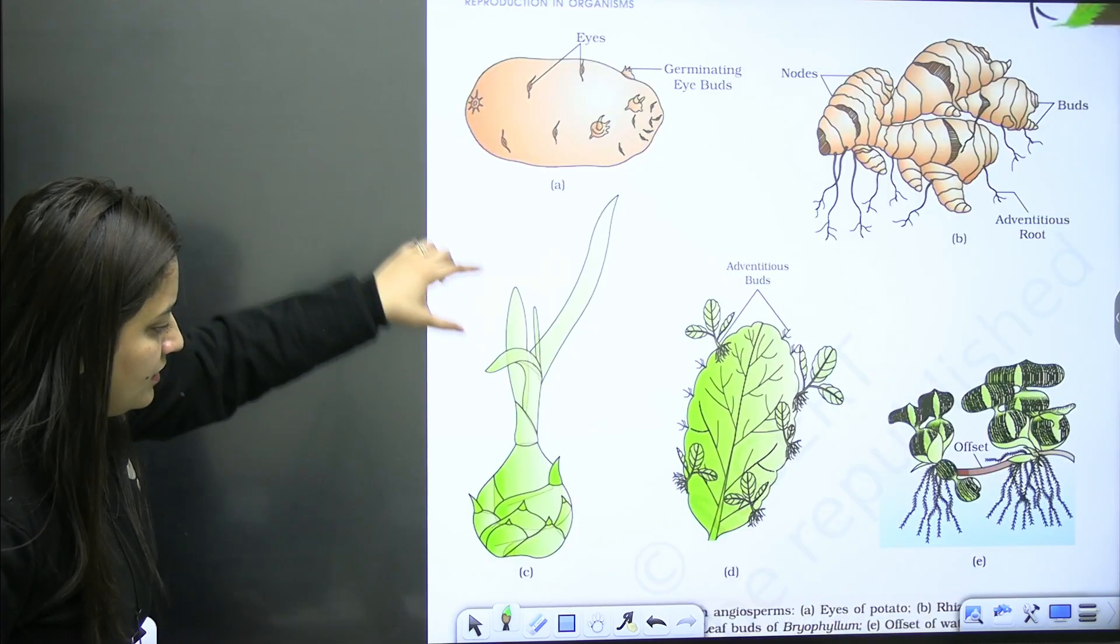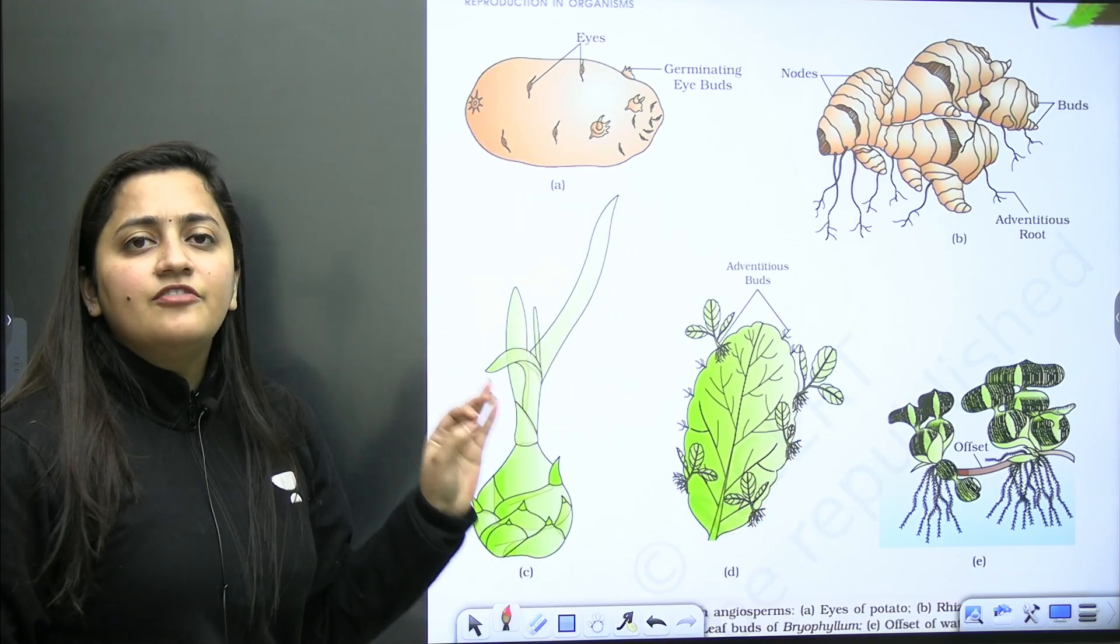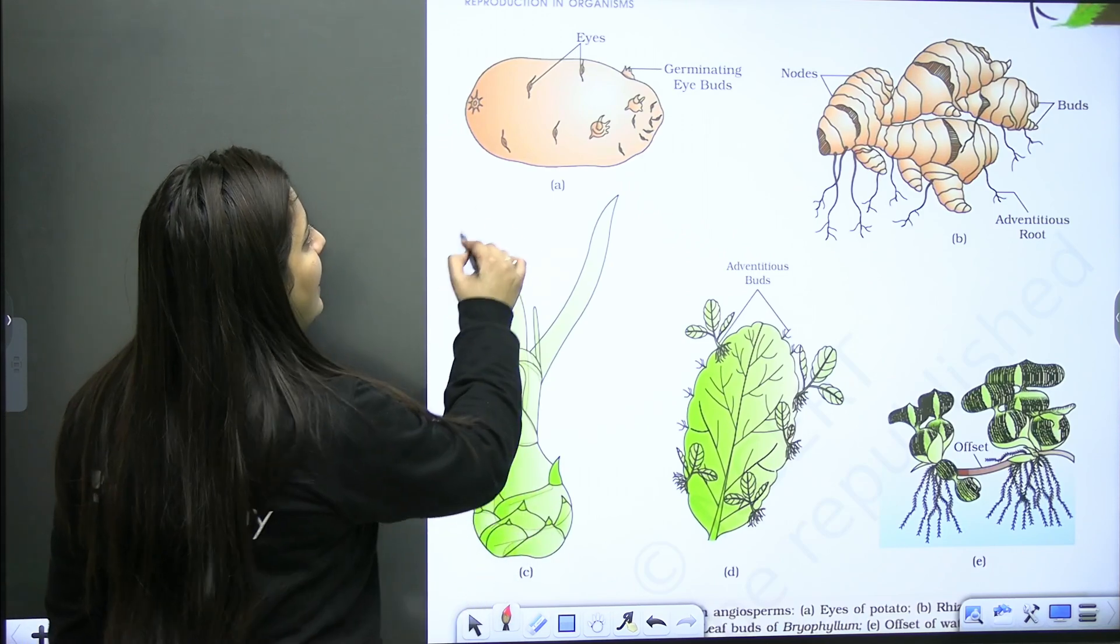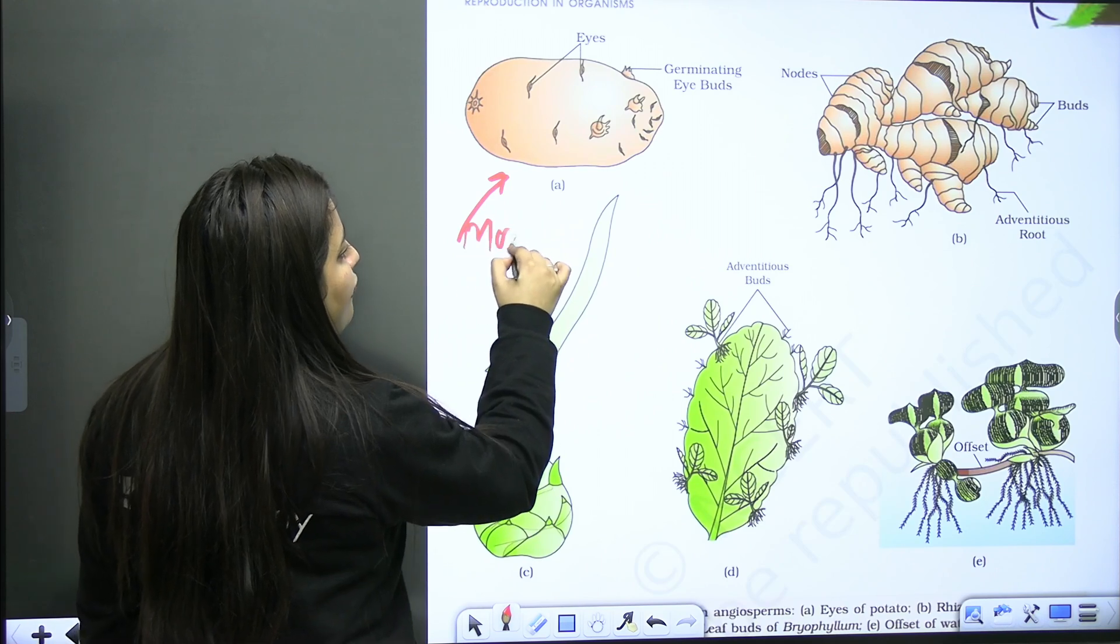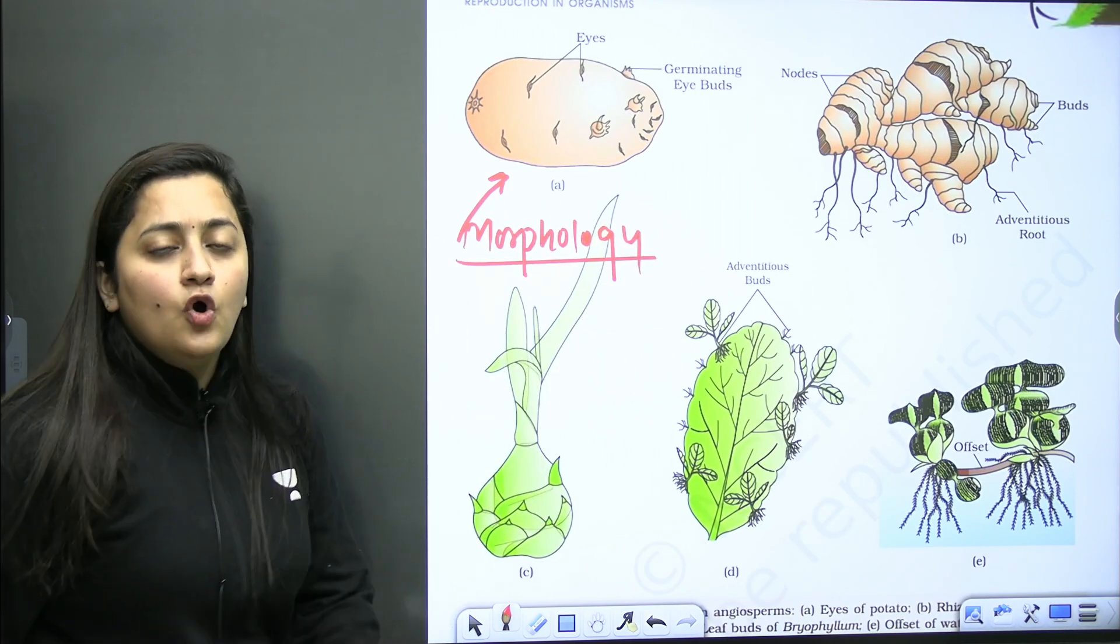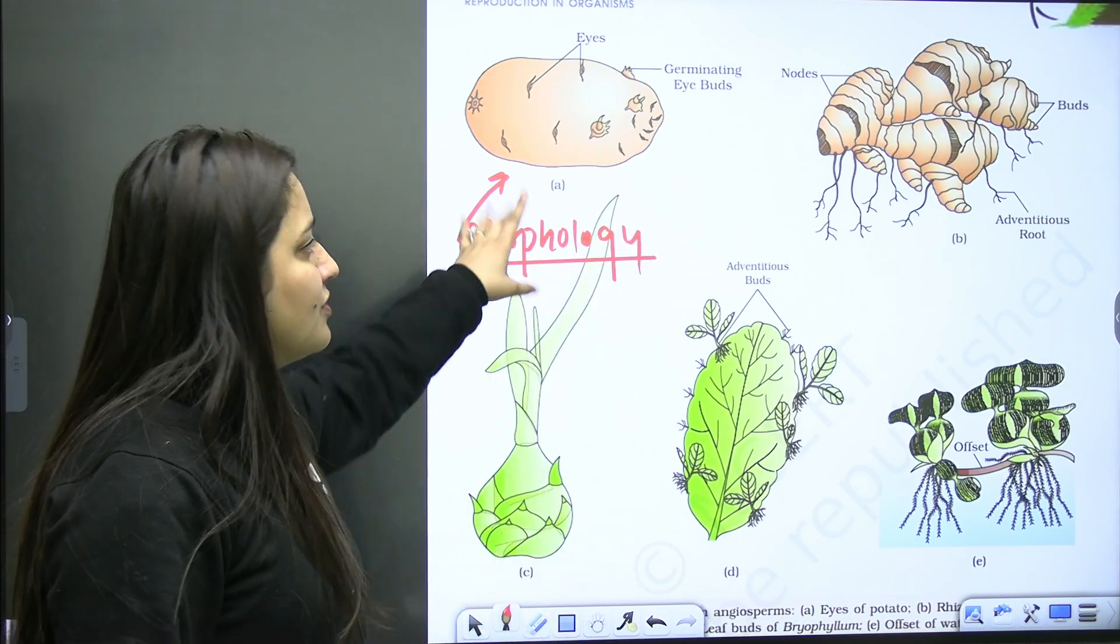See students, why NTA deleted few topics? Because they are repeated topics. If I talk about this particular chapter, basic things related to sexual and asexual reproduction are given, and the same is discussed in human reproduction and sexual reproduction in flowering plants. This chapter is even related to your plant kingdom and morphology part. Let me show you how. First of all, see this picture.